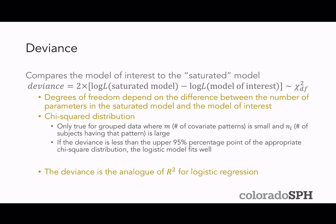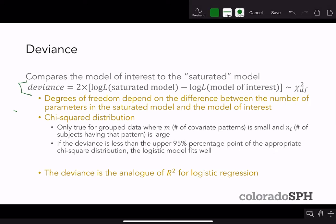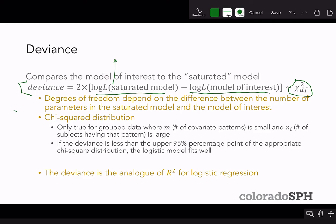The deviance compares the model of interest to the saturated model, and it is calculated as two times the log likelihood for the saturated model minus the log likelihood for the model of interest. You find those log likelihoods by plugging the covariate values for the saturated model and the model of interest into the log likelihood expression from earlier lectures. This deviance quantity, under certain conditions, follows a chi-squared distribution with degrees of freedom equal to the difference in the number of parameters between the saturated model and the model of interest. Because it has an approximate chi-squared distribution, that's why you can use it to get a p-value.